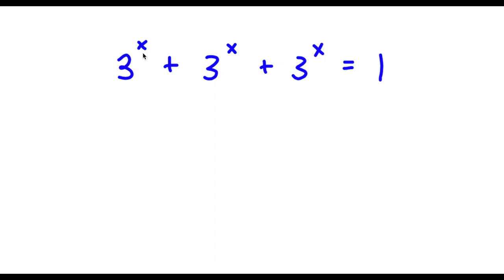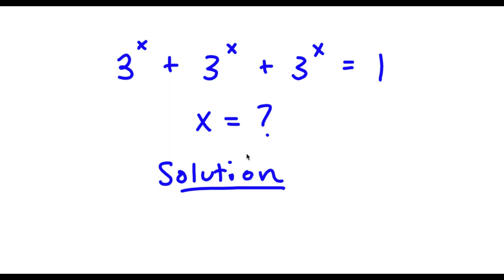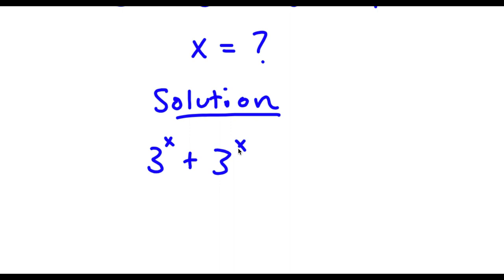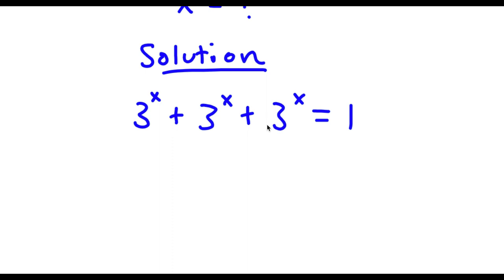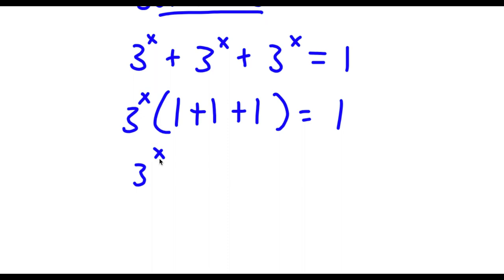Alright, so I have 3 to the power of x plus 3 to the power of x plus 3 to the power of x is equal to 1. From my left hand side, I'm going to factor out 3 to the power of x. So now I have 3 to the power of x times 1 plus 1 plus 1 is equal to 1. Now if I simplify what's in the parentheses, I get 3 to the power of x times 3 is equal to 1.